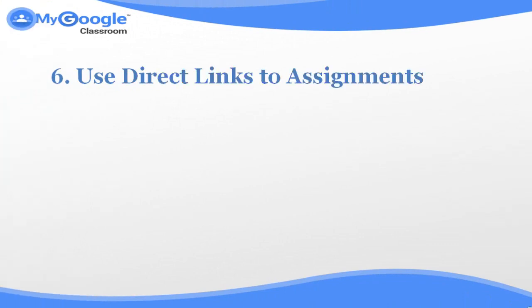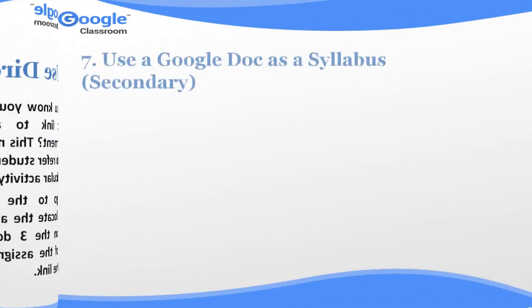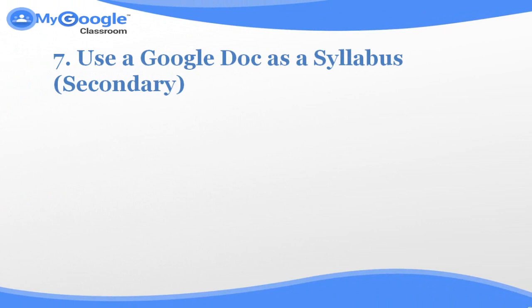Number six: use direct links to assignments. Did you know you can get a direct link to a specific assignment? This makes it so easy to refer students back to a particular activity. Just go to the Classroom page, locate the assignment, click on the three dots to the right of the assignment, and copy the link.